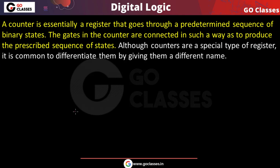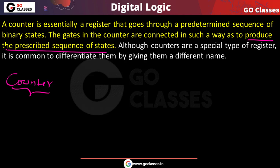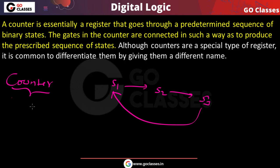A counter is a special type of register. What is special about it is that it is designed to go through a sequence of states — a prescribed sequence. For example, state one, then state two, then state three, then back to state one. We design the counter so that it produces this predetermined sequence of states.